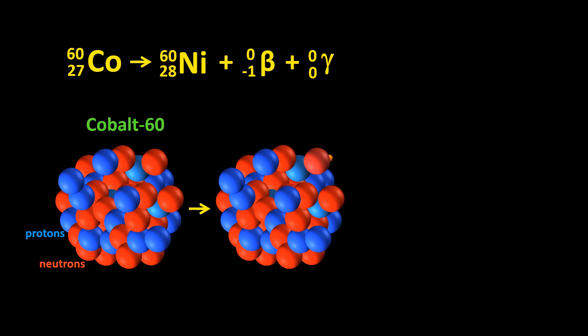When cobalt-60 atoms decay, they turn into nickel-60 atoms, which are stable. But not every atom in a sample of cobalt-60 decays at the same time.